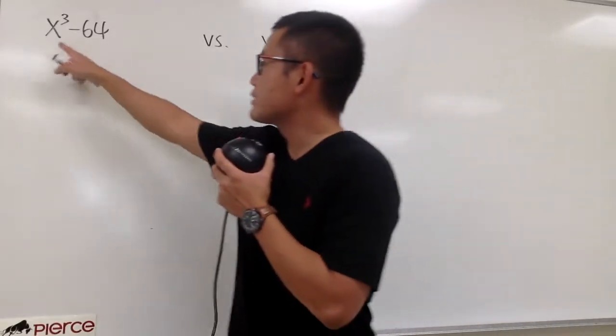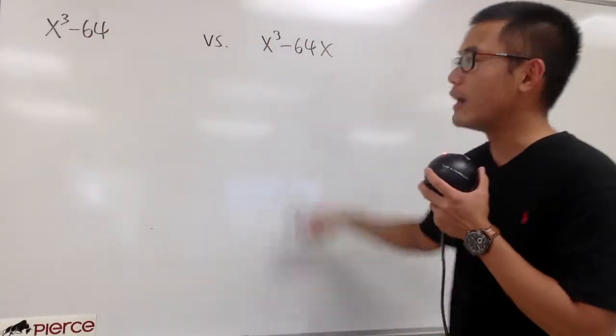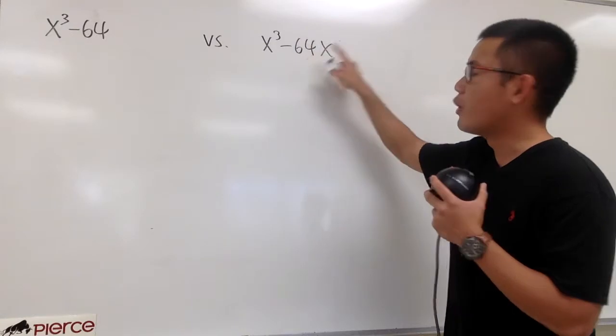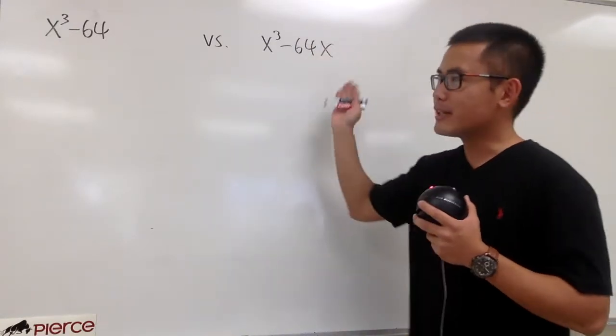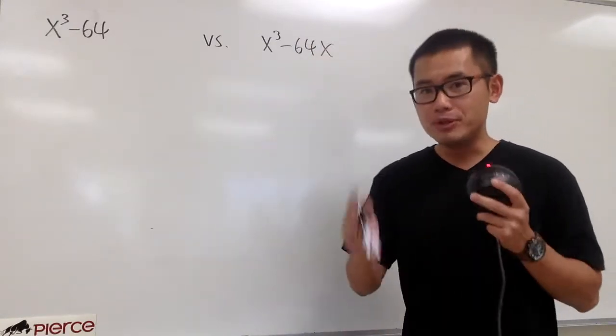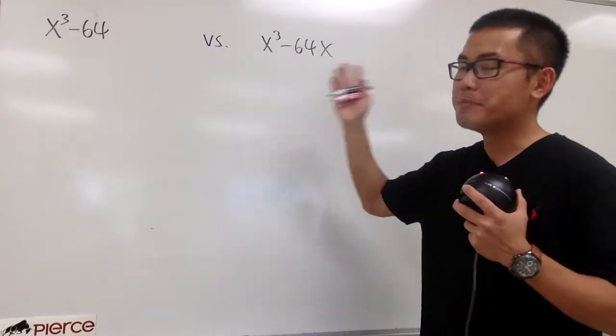Two fascinating questions on the spot. The first one, x to the 3rd power minus 64. The second one, x to the 3rd power minus 64x. They are super similar, right? Be sure you pause the video and try them carefully.